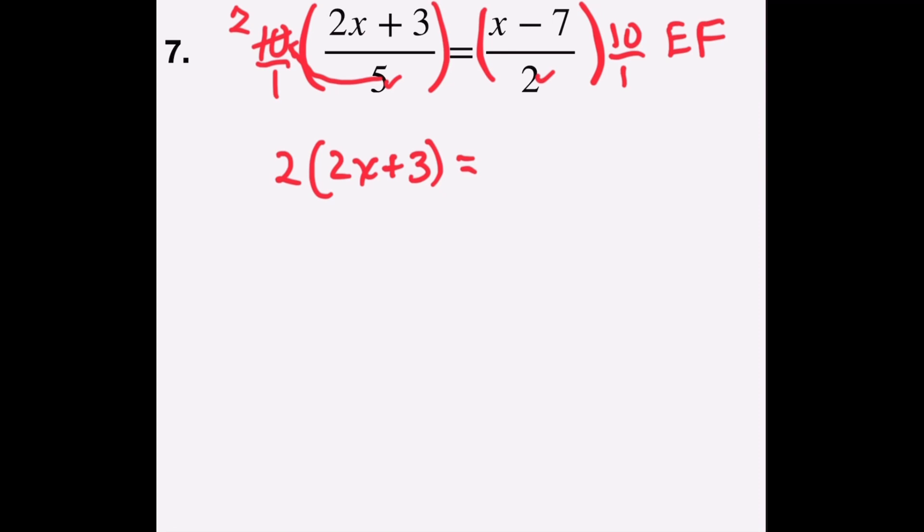On the right side, I'm going to ask the same question. 2 divides into 10 how many times? And that's 5. So now I have 5 times the numerator, which is x minus 7. So step one, eliminate fractions, is complete.